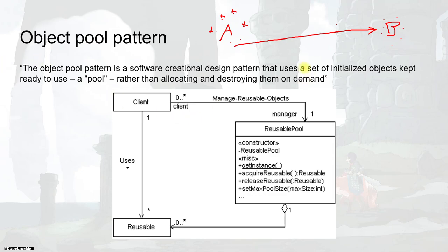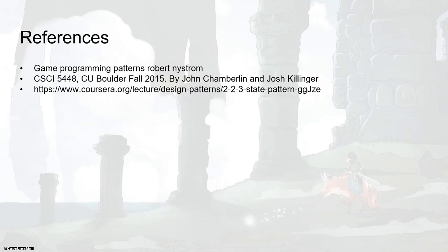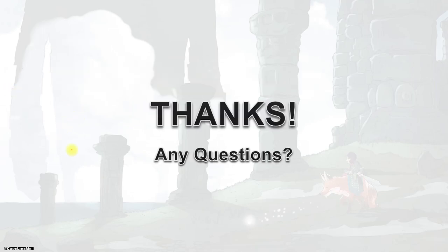That is basically how the object pool pattern is used. To properly use it, we need to know that allocating and destroying — in this case spawning and destroying — is more expensive than simply changing the location of already-spawned NPC characters. We should use this pattern only if that condition is true. Thanks for watching — that concludes this lecture. If you have any questions, comment down below, and see you in the next lecture.